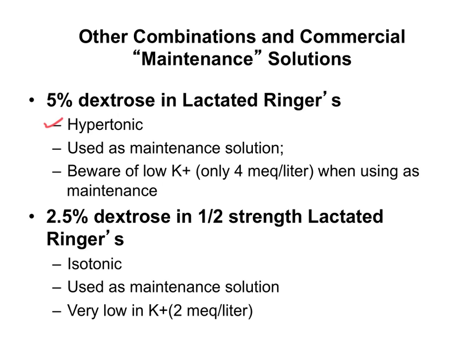The isotonic solution, half-strength or 2.5% dextrose and half-strength lactated ringers, is again too low in potassium to really be called maintenance. So we would have to add potassium in addition to really achieve a maintenance solution.